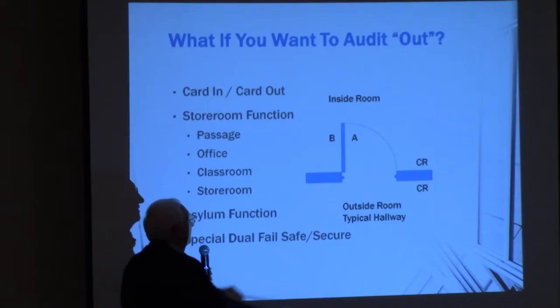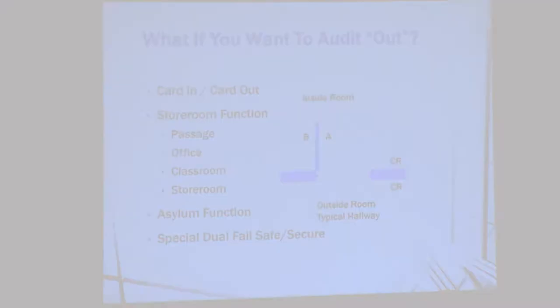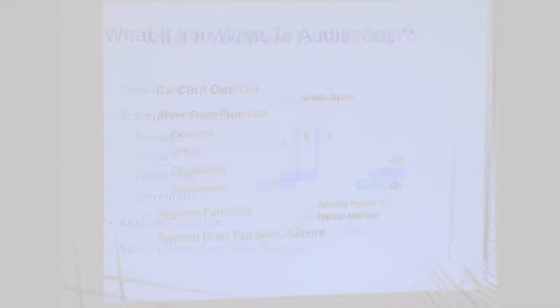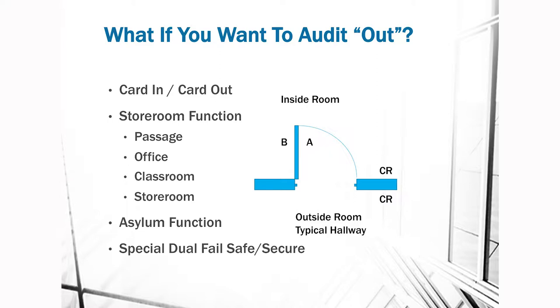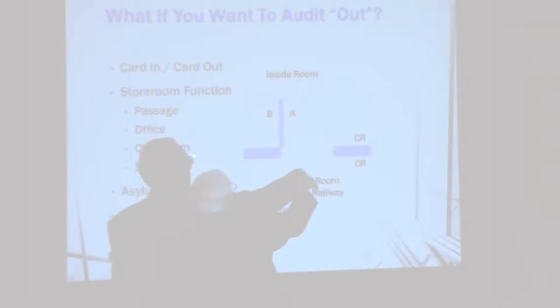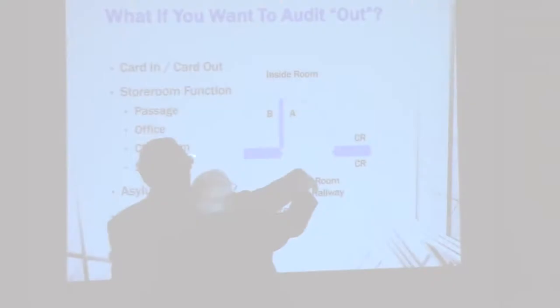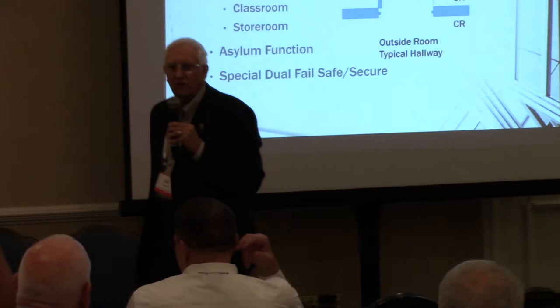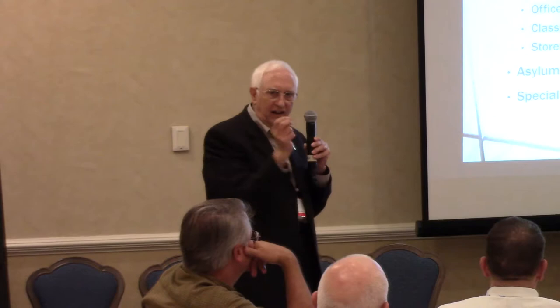Passage function: both the A and B sides are unlocked — it's just a latch set. Office function: the B side is inside the room, the A side is outside. An office function gives you a mechanical way to change whether the B side is locked or not — it could be a push button on the edge of the door or a thumb turn. There are a bunch of different office function variations.